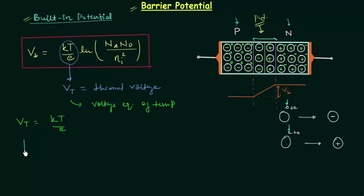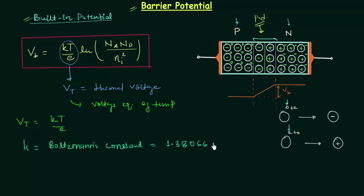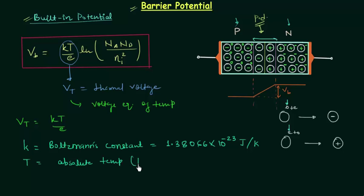K is Boltzmann's constant, equal to 1.38066 × 10⁻²³ joules per Kelvin. Capital T is absolute temperature, and its unit is Kelvin.